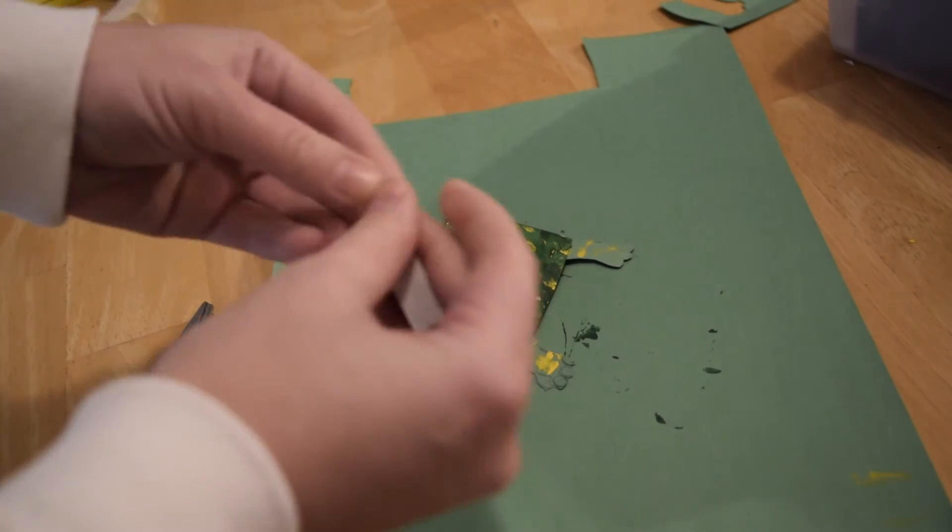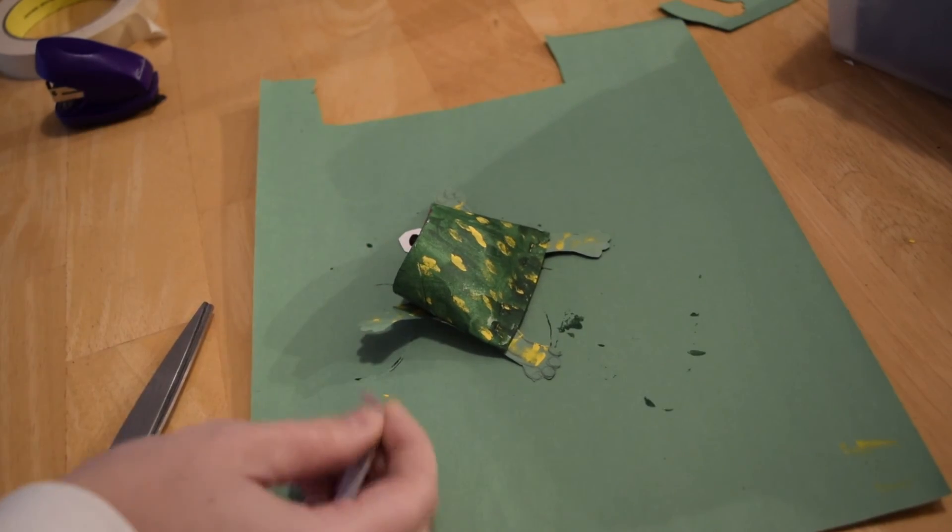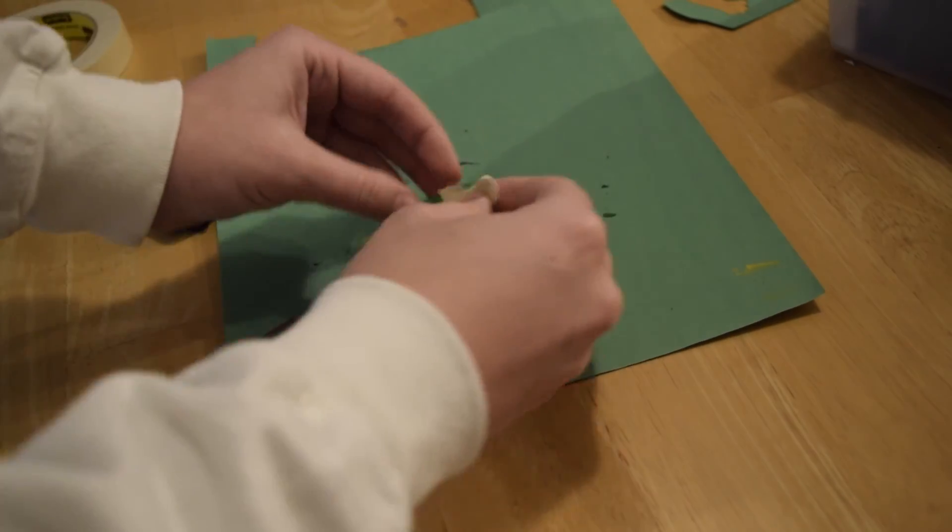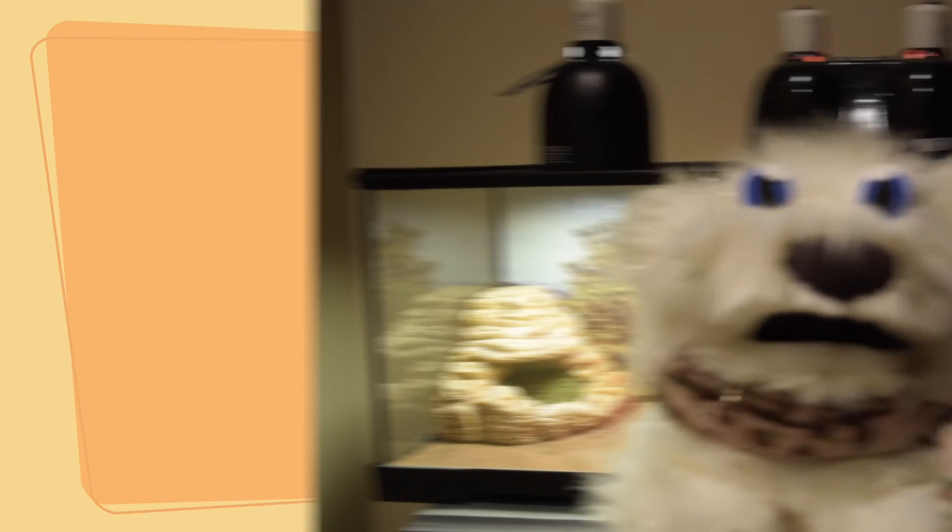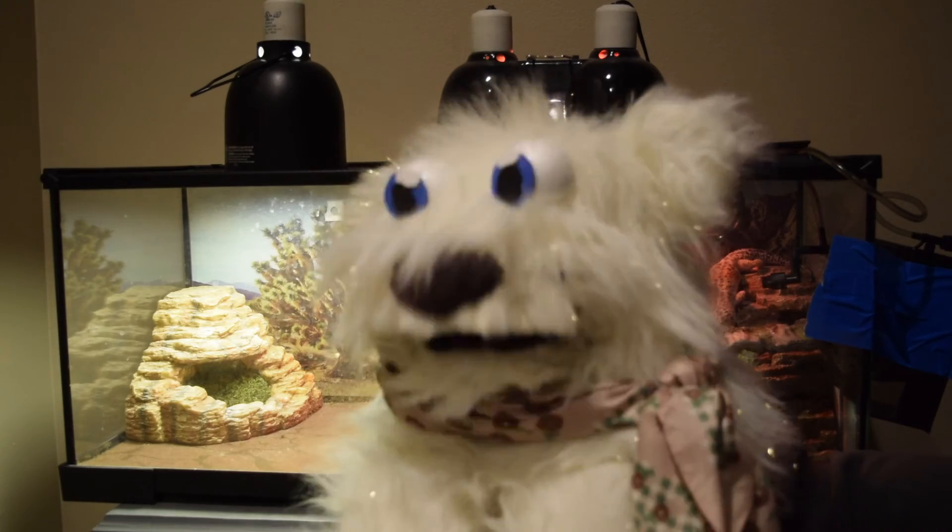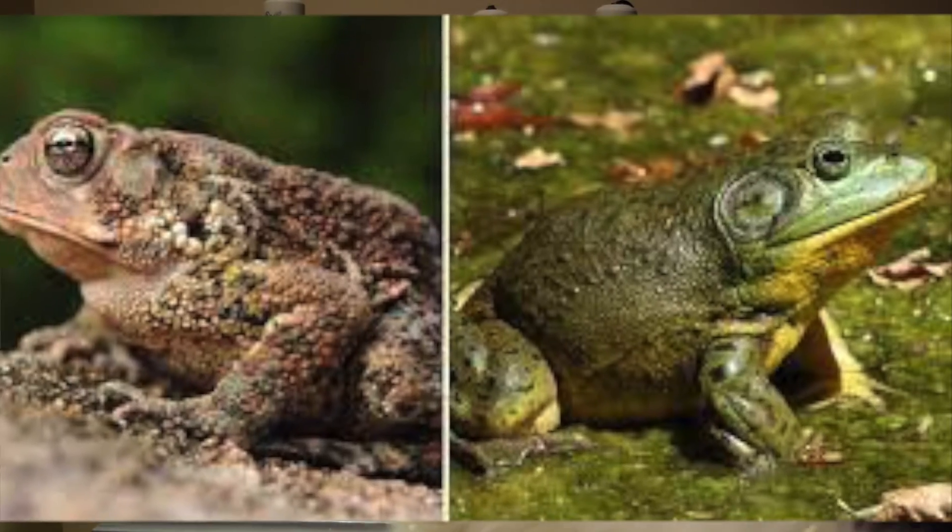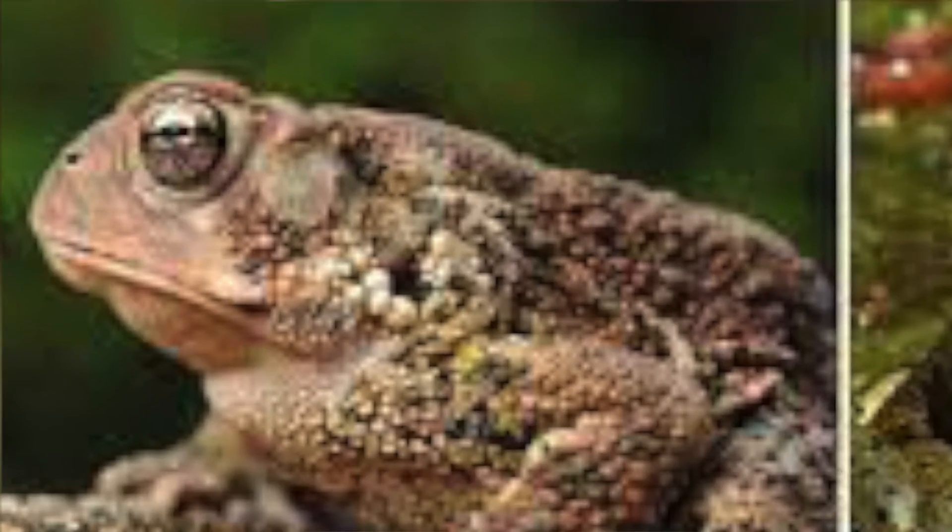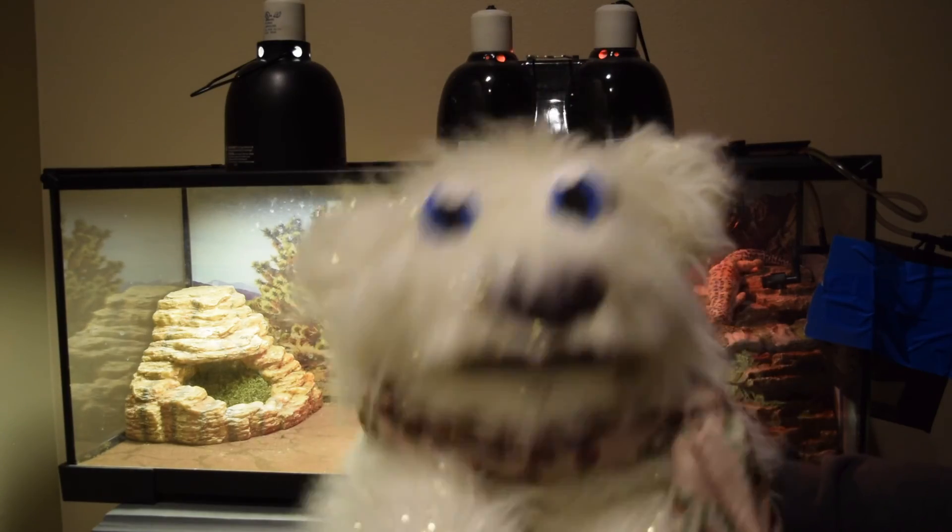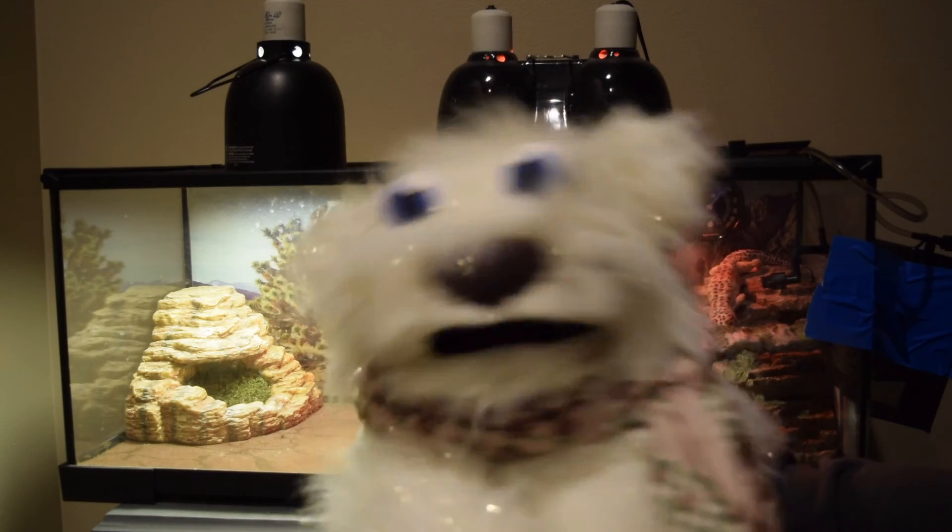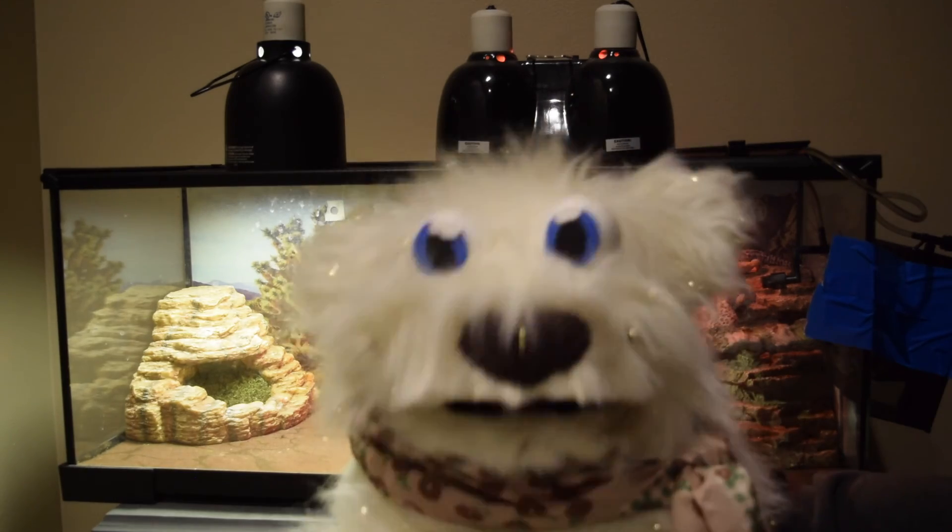So frogs and toads are often mistaken for each other. Some of the easiest ways to tell the difference between them is their skin and legs. Frogs have smooth skin and long back legs for higher jumping, while toads have bumpy skin and short back legs. A frog's skin is actually quite thin and very susceptible to the elements, which is why they stay close to the water. A toad's skin is rougher and more thick, which helps the toad venture further from the water and live underneath and inside wet logs in the forest.